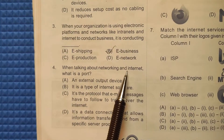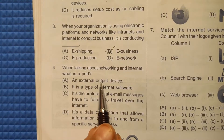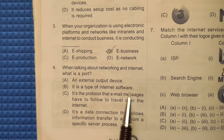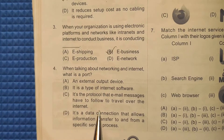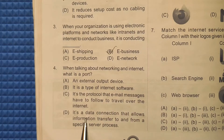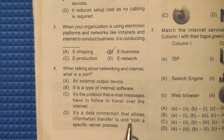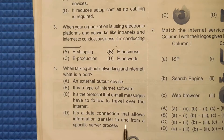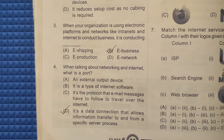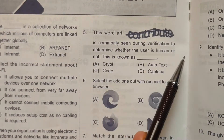Fourth question: When talking about networking and internet, what is a port? Option A: An external output device — incorrect. Option B: A type of internet software — incorrect. Option C: A protocol that email messages have to follow to travel over the internet — also incorrect. Option D: A data connection that allows information to be transferred to and from a specific server process — this is correct. The correct answer is option D.